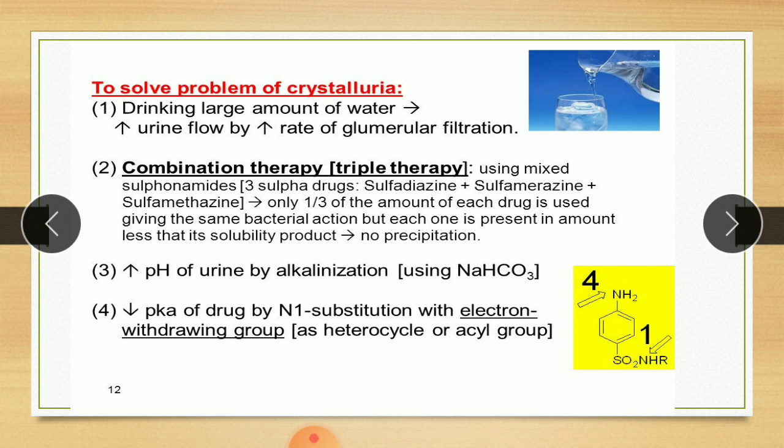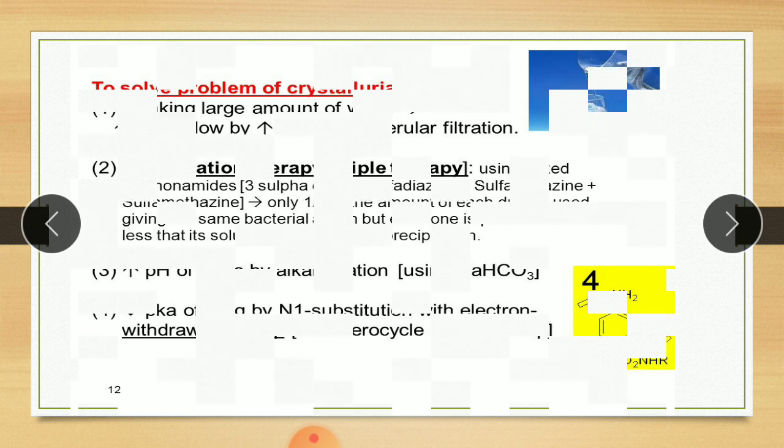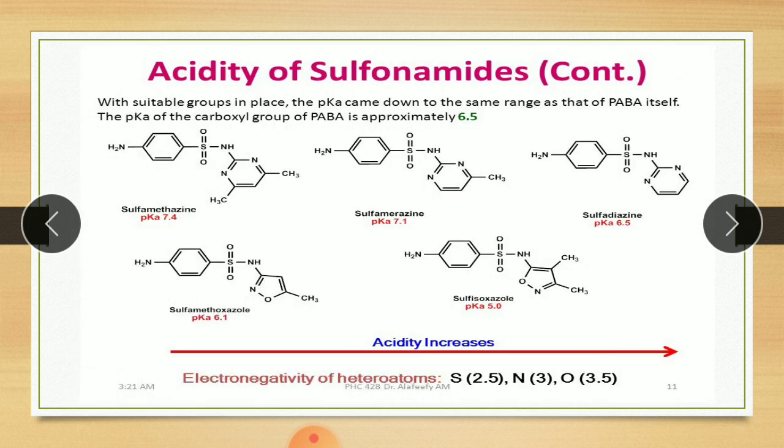The fourth approach is by decreasing the pKa of drug by preparing the derivative of sulfonamide that has lower pKa value that is closer to pH of urine. This approach has been taken with virtually all sulfonamides in clinical use today. For example, new sulfanilamides: sulfamethiazine having pKa value 7.4, sulfamerazine having pKa value 7.1, sulfadiazine pKa value 6.5, sulfathiazole pKa value 6.1, etc. These are all new sulfonamides which have lower pKa values or which have pKa values near to PABA. These new drugs have less chances of crystalluria. This is the importance of pKa value in sulfonamides.